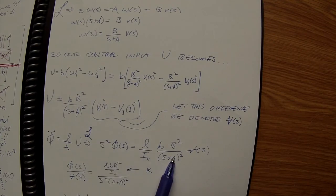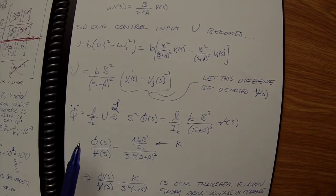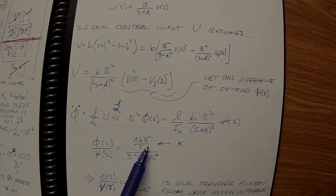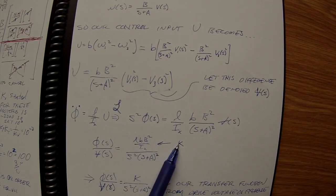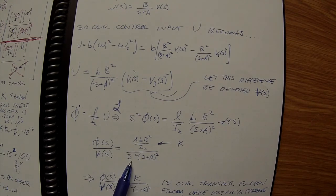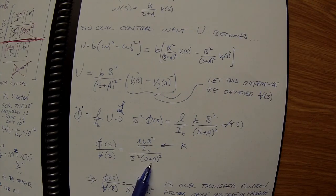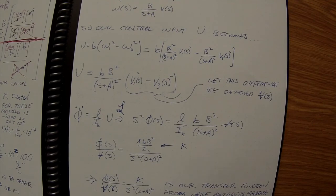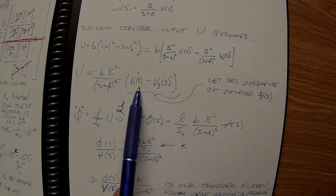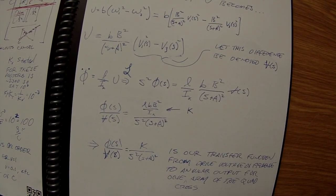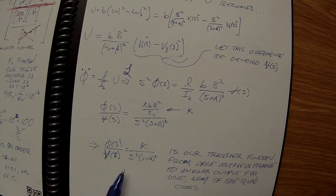Our transfer function becomes, moving the S squared down, a denominator term that we'll denote as a gain K over a double pole at zero and a double pole at our big A. So that's our transfer function from drive voltage difference across the body to angular output for one arm of the quad, one cross arm of the quadrotor.